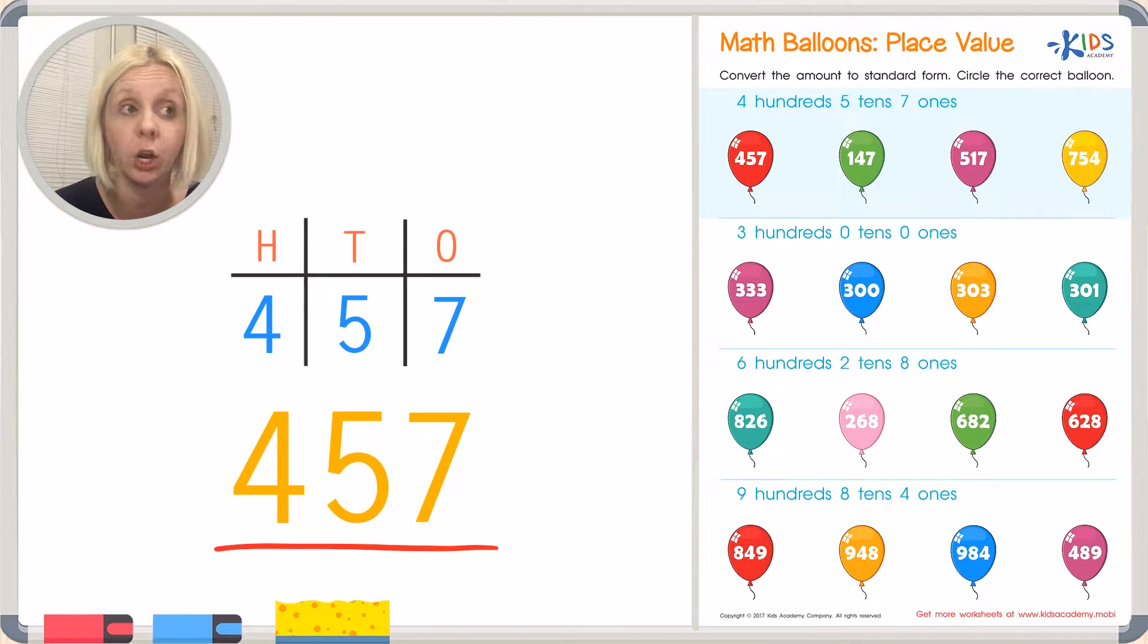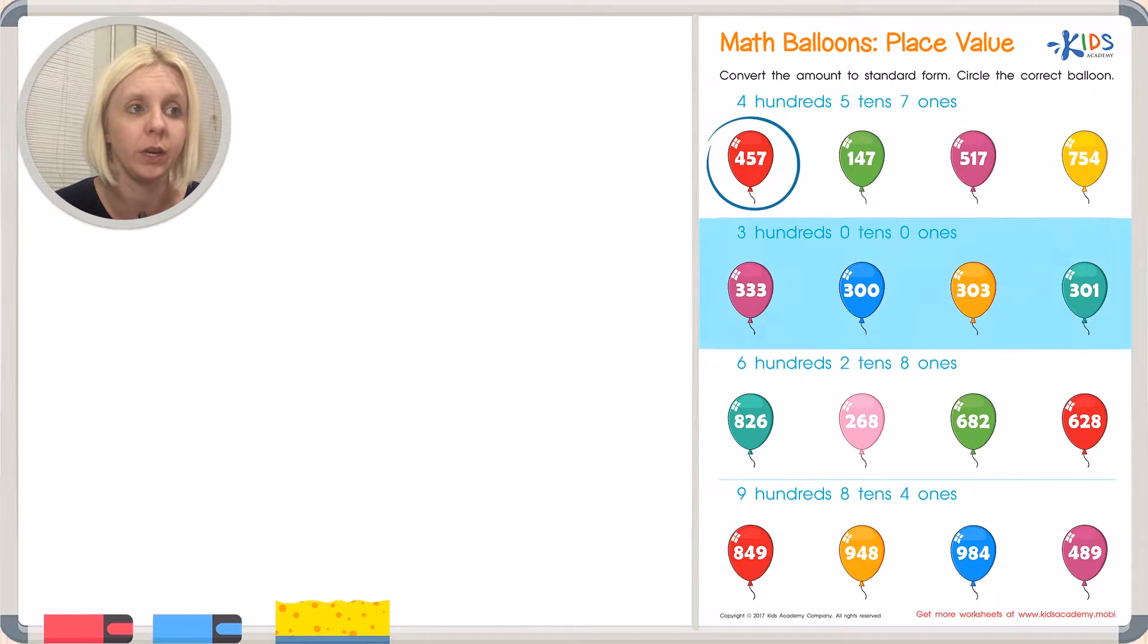So let's look for four hundred and fifty seven over here with our balloons. And it looks like it's the first one right here, isn't it? Four hundred and fifty seven. This is the correct balloon and the directions say circle the correct balloon. So we're going to go ahead and we're going to circle that one right there. That's the standard form of this number.